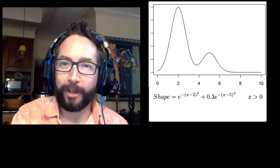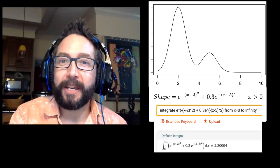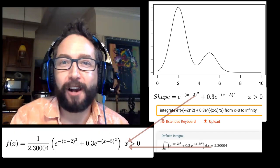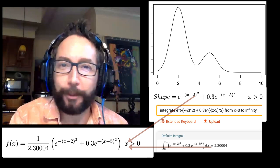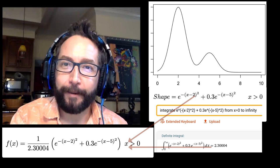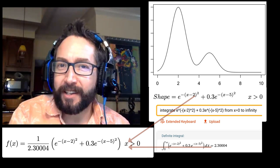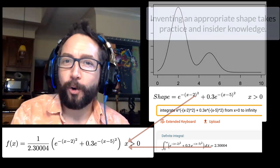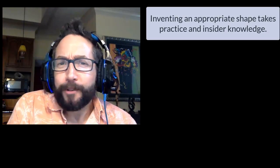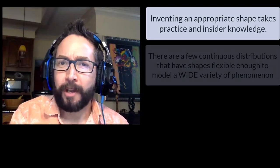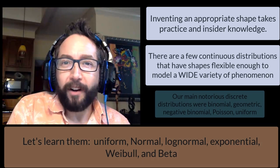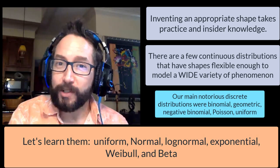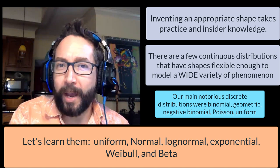We have the skills to write an equation for any shape we like and convert it into a PDF fairly easily — just figure out the area underneath that curve and multiply by the reciprocal of that area. But in a lot of cases in business analytics and science, there are notorious distributions that almost seem tailor-made to model the quantities we wish to study. So what are these notorious continuous distributions and when can we use them?